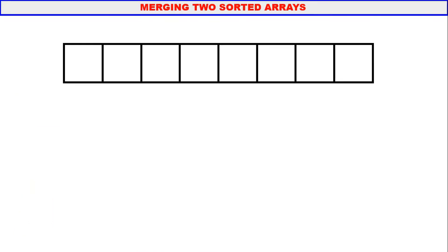Now let us consider an array with elements 10, 20, 30, 40, 5, 15, 30, and 35. The first four numbers in blue are in ascending order: 10, 20, 30, 40. The second part of the array contains four numbers in red: 5, 15, 30, 35 — also in ascending order. So the first part of the array is sorted and the second part is also sorted. We will now merge these two sorted parts.